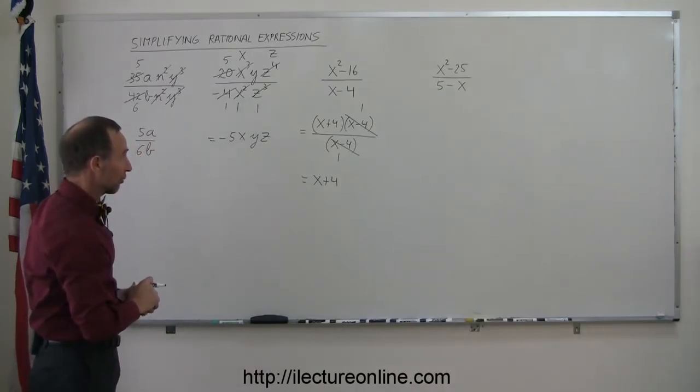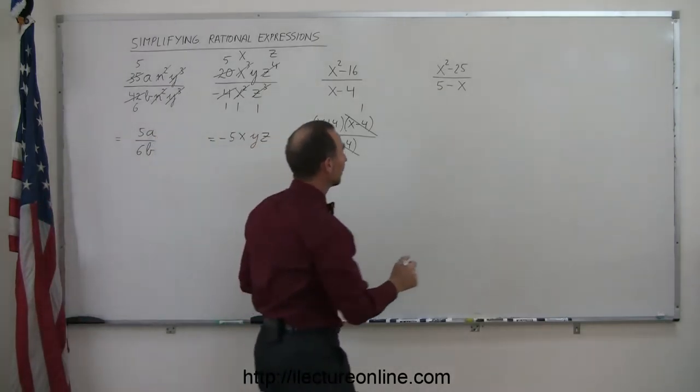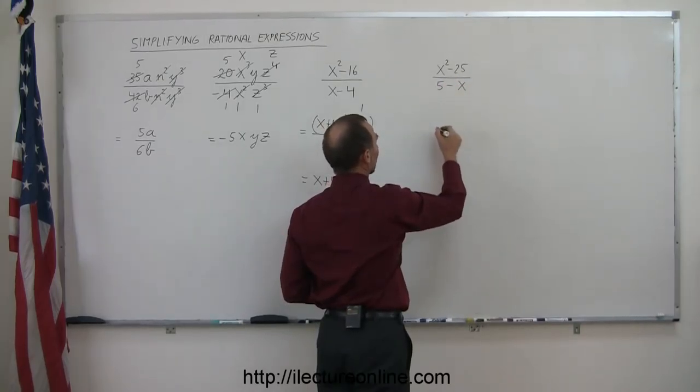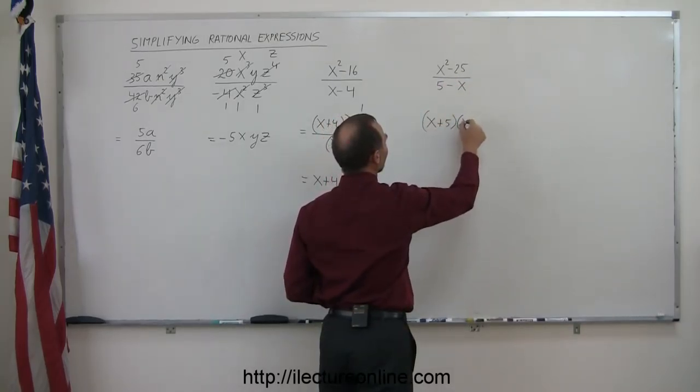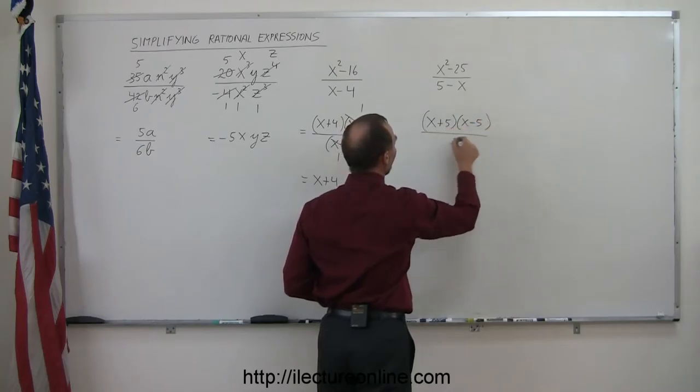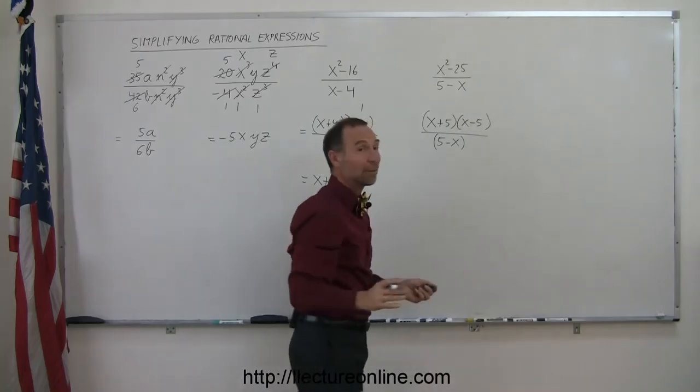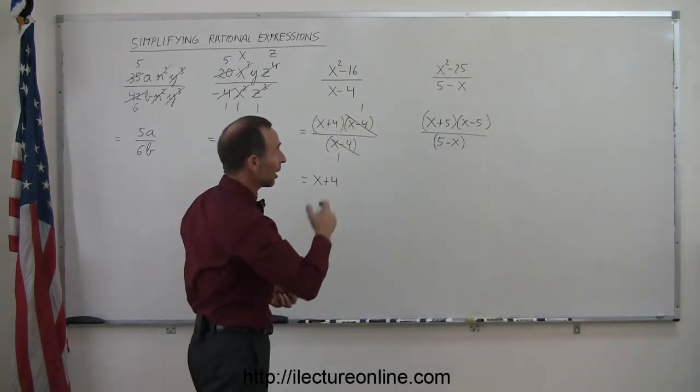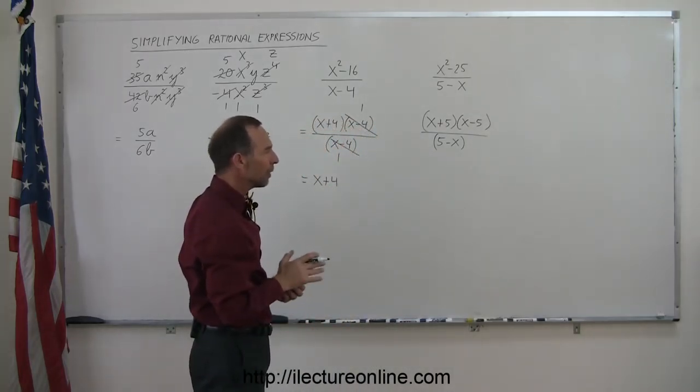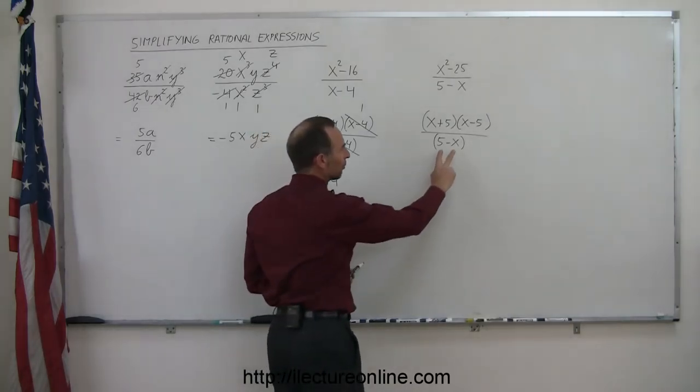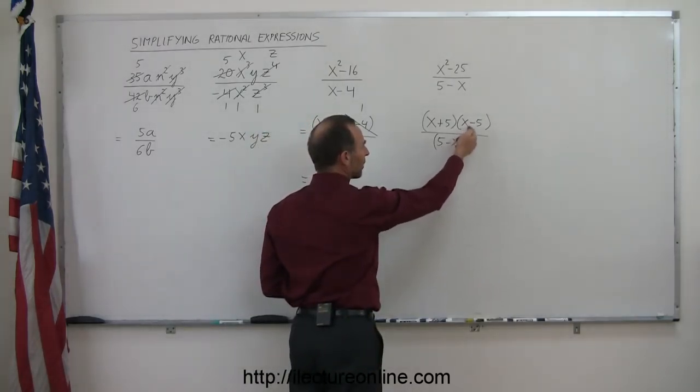Looking at the next problem, it looks very similar. So let's try that. This looks like the difference of squares. I can write this as an x plus 5 times an x minus 5, and divide this by a 5 minus x. Now you say, well, okay, here I must stop because I don't see something common in the numerator and denominator. However, if you were to flip these around, then you can see the commonality.